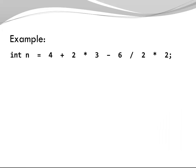Integer n is 4 plus 2 times 3 minus 6 divided by 2 times 2. First, we're going to look at the operators with the highest precedence, which is times, divided, modulus. So we have three of this kind. We're starting with the leftmost one, executing 2 times 3 first, which evaluates to 6.